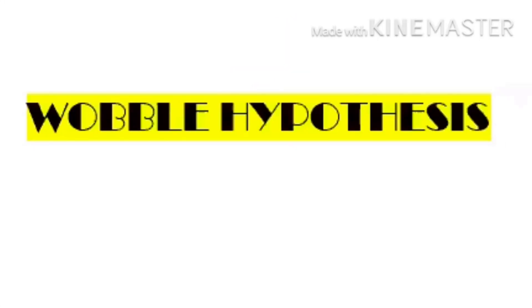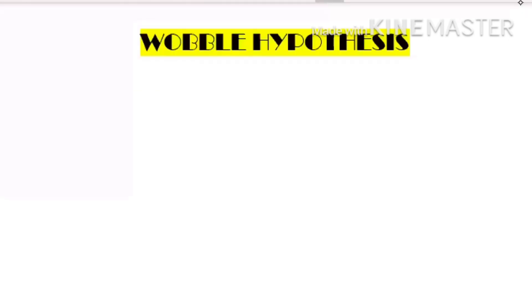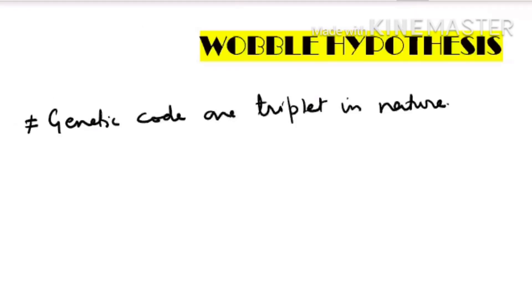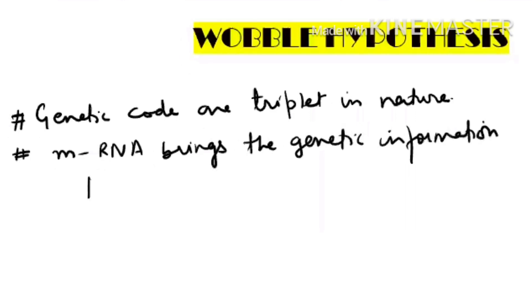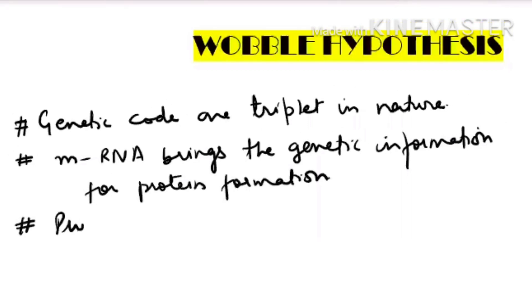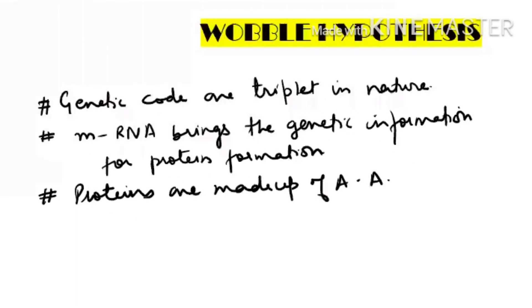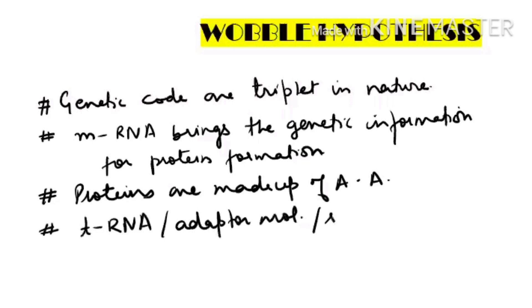Hello students, today we are going to study about the Wobble Hypothesis. We know very well the genetic code is triplet in nature and messenger RNA carries the genetic code. Messenger RNA brings the genetic information for protein formation. Proteins are sequences of amino acids, and the molecule that brings the amino acids is transfer RNA, which is also known as the adapter molecule or soluble RNA.